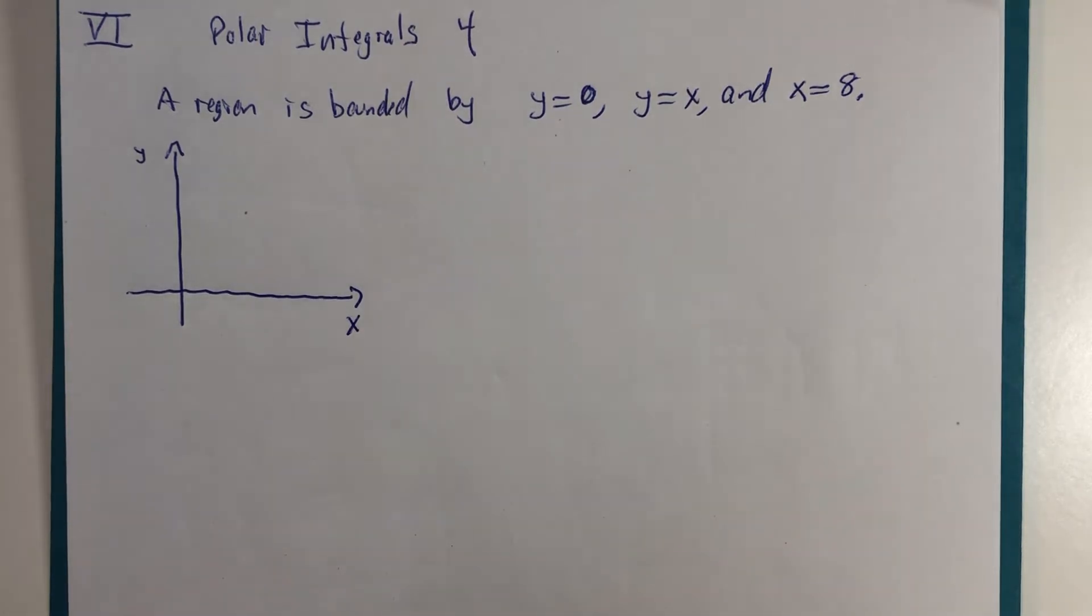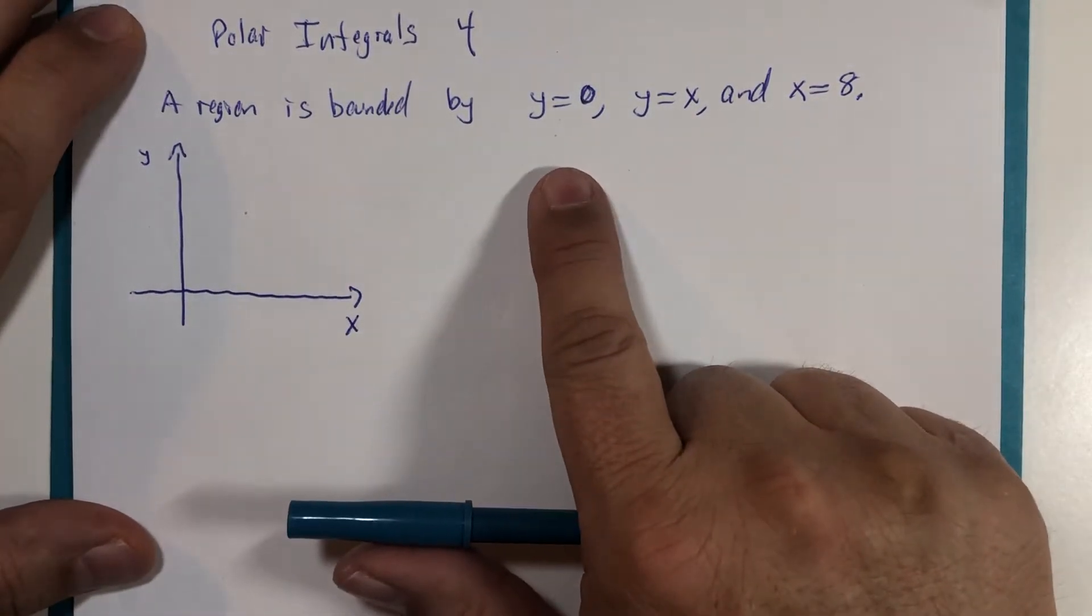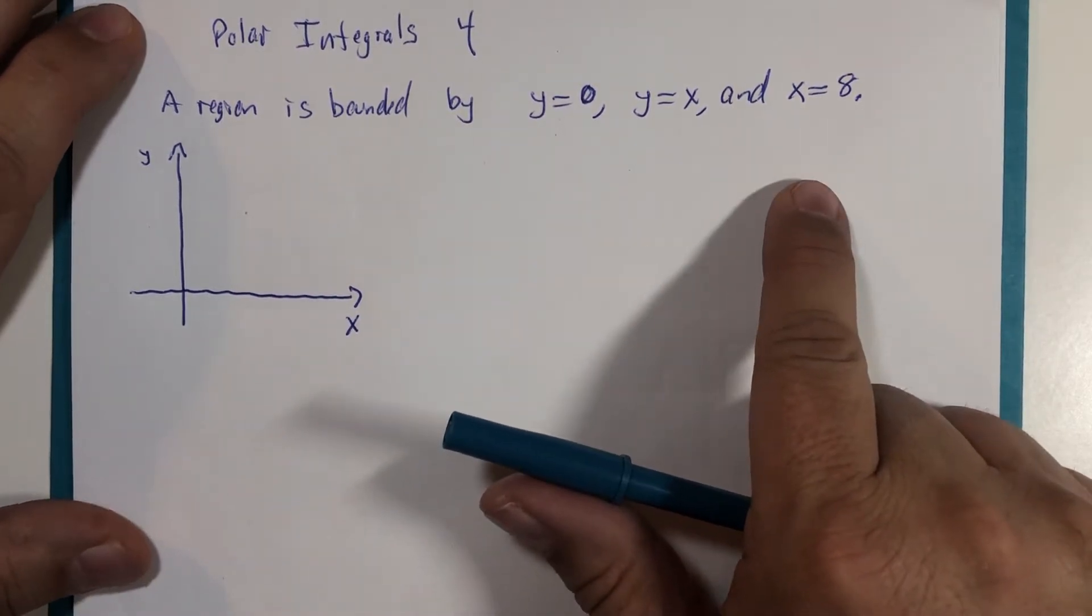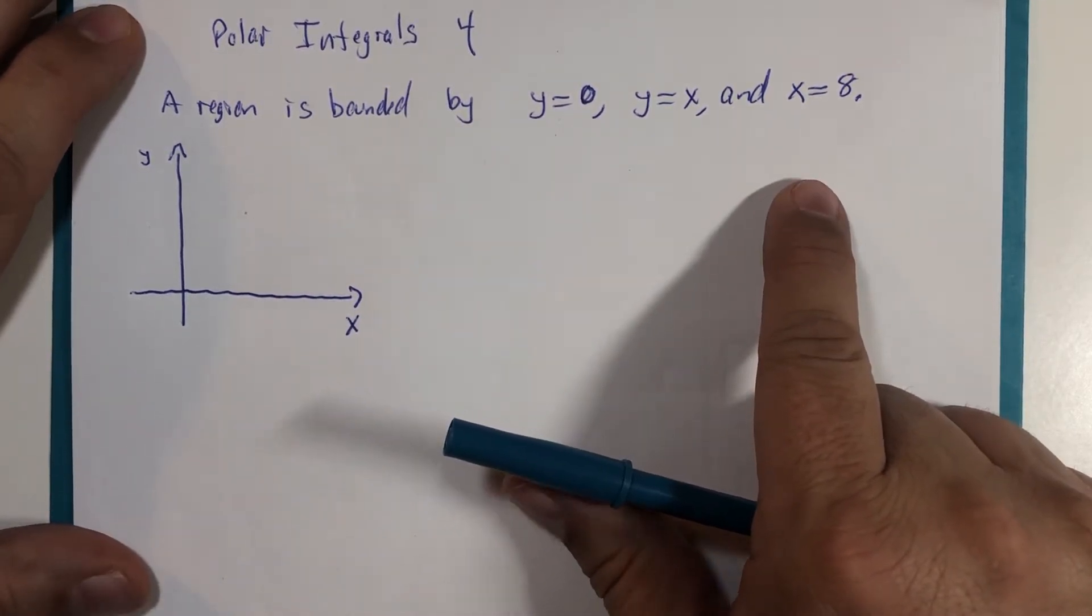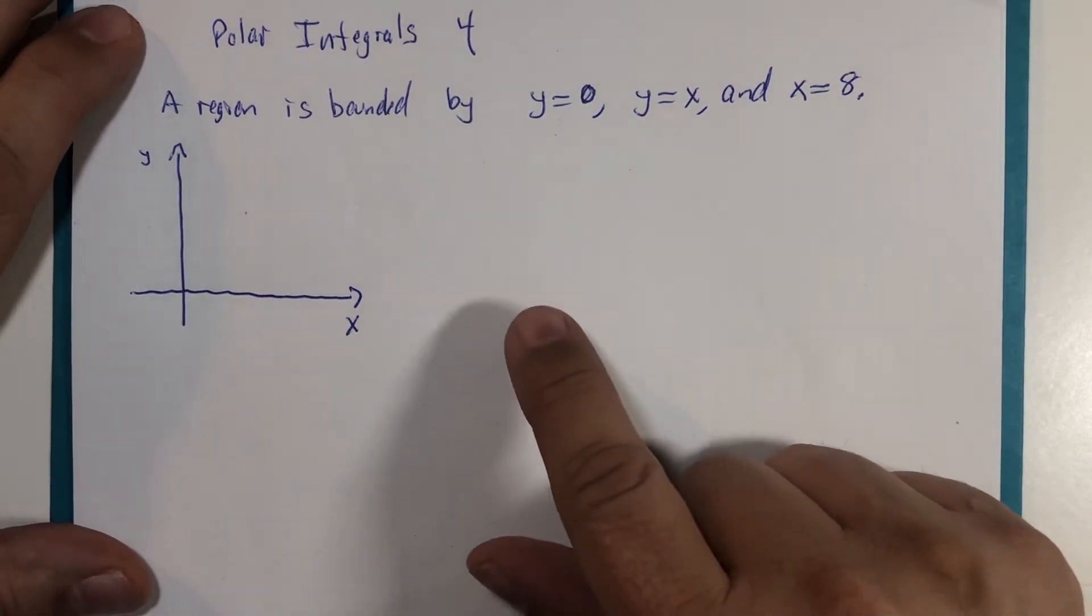All right, we just keep plugging away at the concept. I'd like to show you another not-too-difficult region in integration, but just another way of phrasing and asking the question, and that is, if we have a region that's bounded by y equals 0, y equals x, and x equals 8, once we've looked at the region visually, could we set up the polar double integral for area?